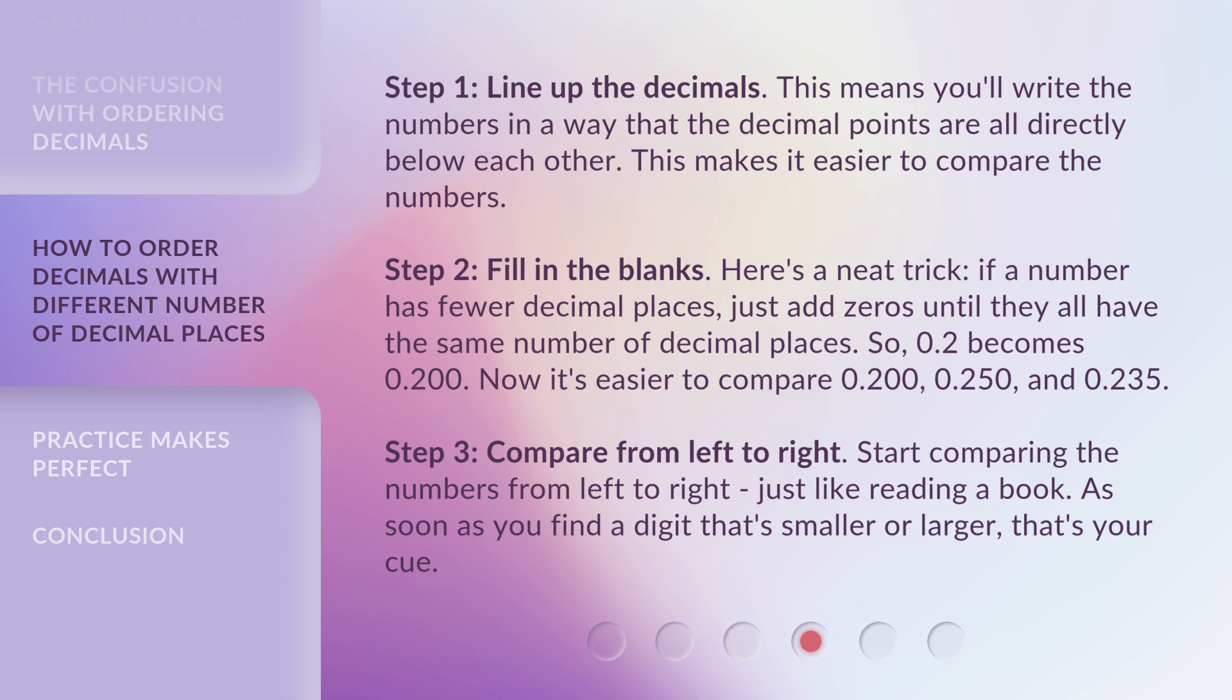Step 2. Fill in the blanks. Here's a neat trick. If a number has fewer decimal places, just add zeros until they all have the same number of decimal places. So, 0.2 becomes 0.200. Now, it's easier to compare 0.200, 0.250, and 0.235.